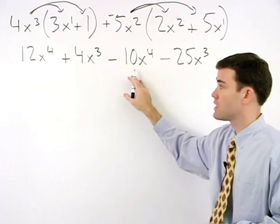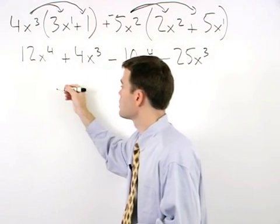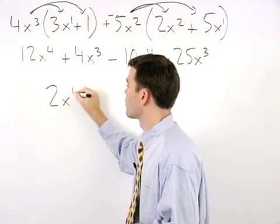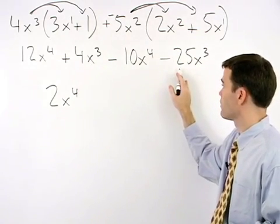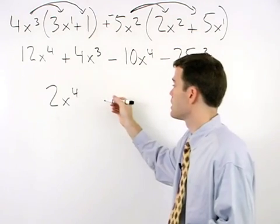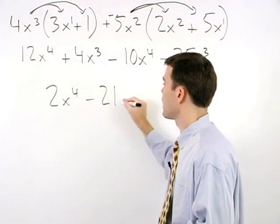12x to the fourth minus 10x to the fourth is 2x to the fourth. And positive 4x to the third minus 25x to the third is negative 21x to the third.